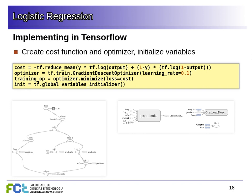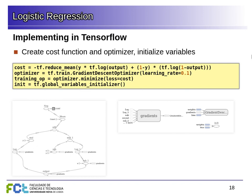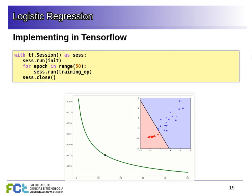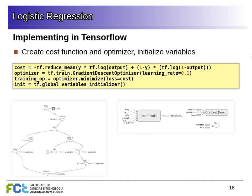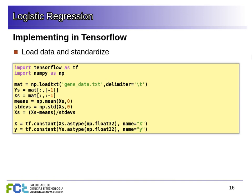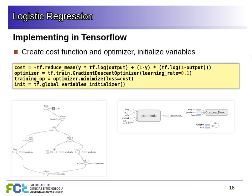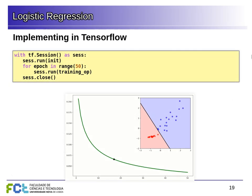Now we create a session. Within the session, we first run the initialization to set the initial variable values. Then, for each of 50 epochs, we run the training operation. The training operation is the minimization of the loss function with one gradient step. One call to the gradient descent optimizer equals one epoch because we're using the whole dataset — we compute everything with all the data and then take one step in the gradient direction. We do this 50 times.